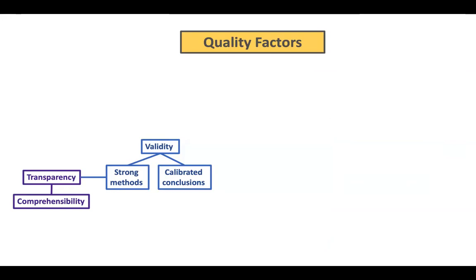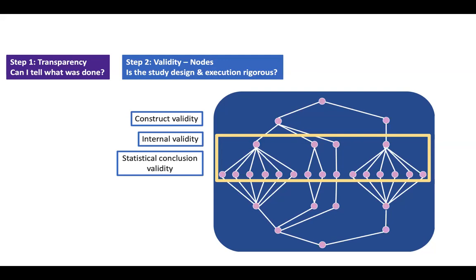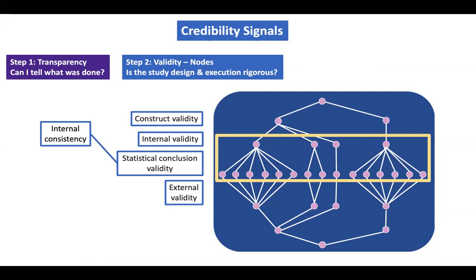The next core set of factors relates to validity — including both the strength of the methods and the calibration of the conclusions to the evidence. For the strength of the methods, I like to conceptualize it in terms of the four validities: construct validity (are measures and manipulations measuring what they're meant to?), internal validity (if there are causal claims, are they well justified?), statistical conclusion validity (are the statistical inferences sound?), and external validity (are the generalizations well founded?).